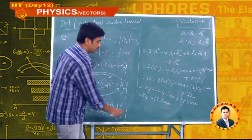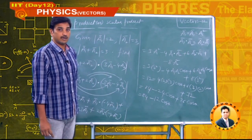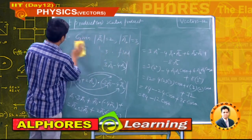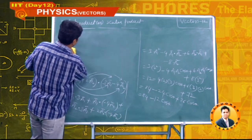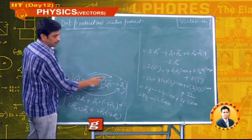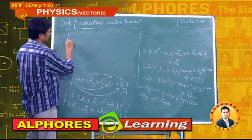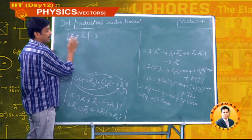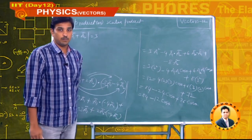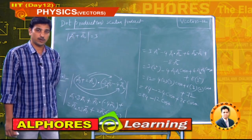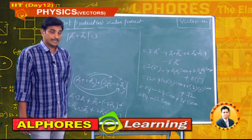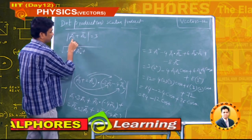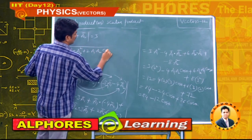To find θ, we use the given condition |ā₁ + ā₂| = 3. By the parallelogram law: |ā₁ + ā₂| = √(a₁² + a₂² + 2a₁a₂cosθ) = 3.